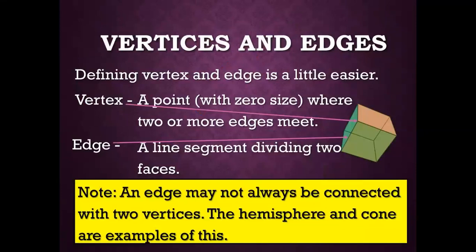Vertices and edges. Defining vertex and edge is a little easier. Vertex, a point with a zero size where two or more edges meet. Edge, a line segment dividing two faces.